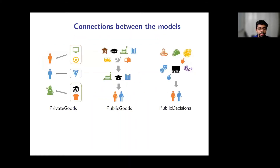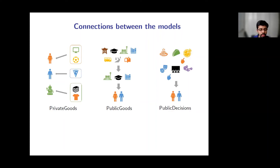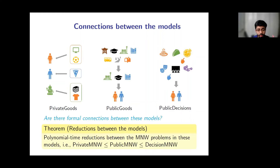So far we saw three models: private goods (partition goods among agents), public goods (collectively select a subset subject to a cardinality constraint), and public decisions (collectively decide on alternatives for public issues). Our next line of investigation is whether there are concrete formal connections between these models. Remarkably, we show that there are polynomial-time reductions between the MNW problems: private MNW reduces to public MNW, and public MNW reduces to decision MNW.